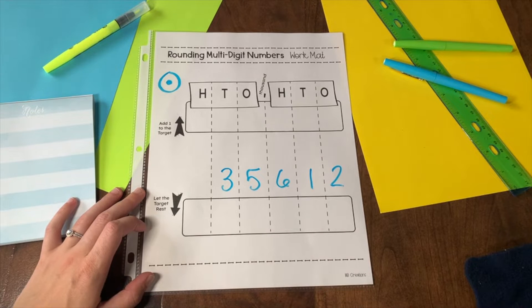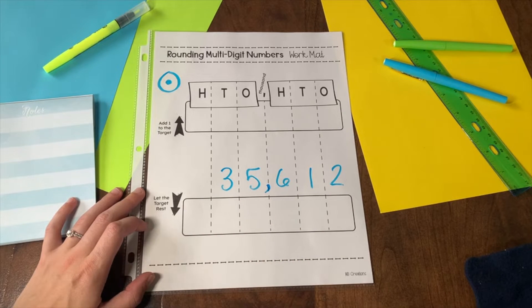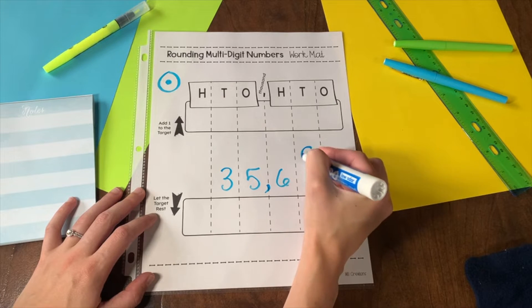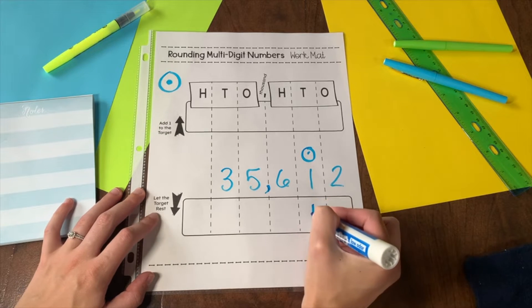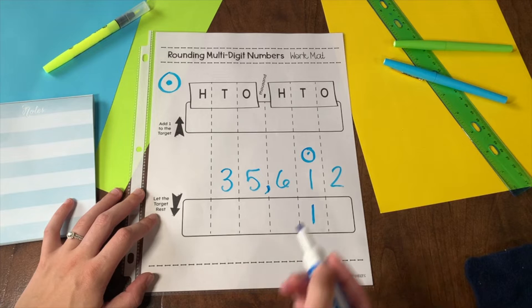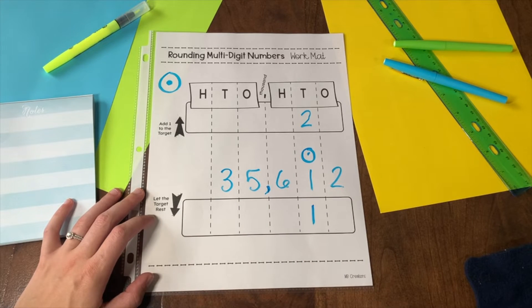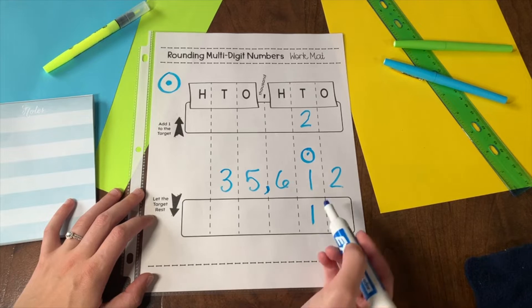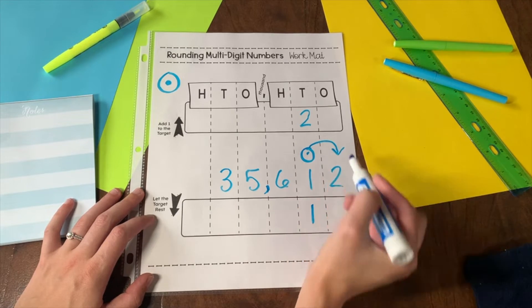In my number 35,612 I'm going to round to the tens place. This is my target. When rounding to the tens place, my target will either stay as 1 or it will increase by 1 going up to 2. To know if it's going to stay as a 1 or increase to a 2, I have to look back at the number that came before.